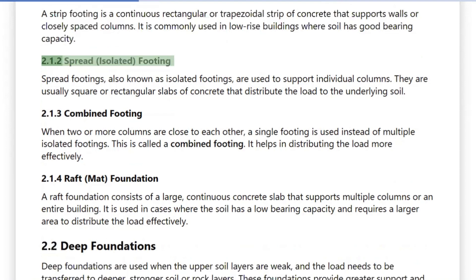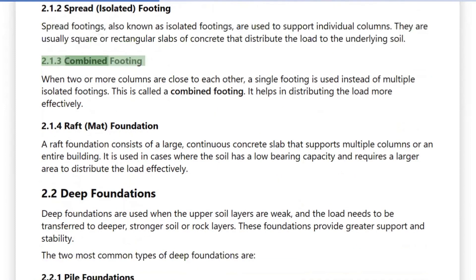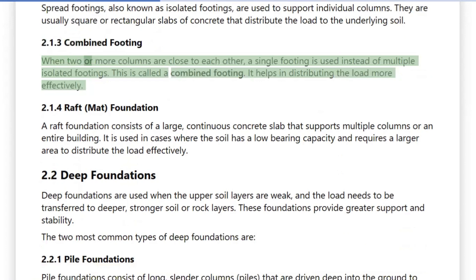2.1.2 Spread/Isolated Footing: Spread footings, also known as isolated footings, are used to support individual columns. They are usually square or rectangular slabs of concrete that distribute the load to the underlying soil. 2.1.3 Combined Footing: When two or more columns are close to each other, a single footing is used instead of multiple isolated footings. This is called a combined footing, and it helps in distributing the load more effectively.